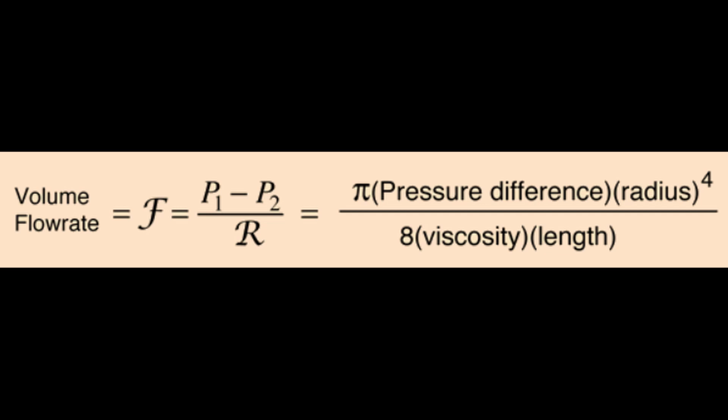What we discovered is that as we decreased the tube length more and more, the volume of water expelled into the bucket increased more and more, meaning the total flow rate actually increased. This makes sense because Poiseuille's Law theorizes this inverse relationship between tube length and flow rate.